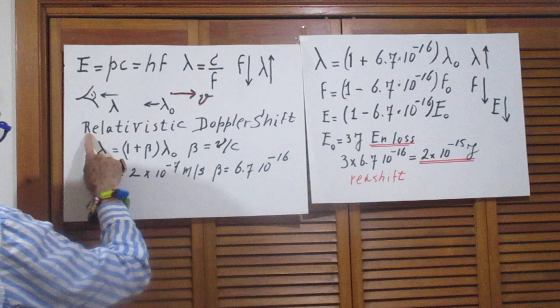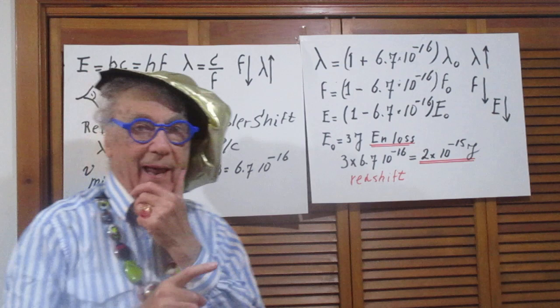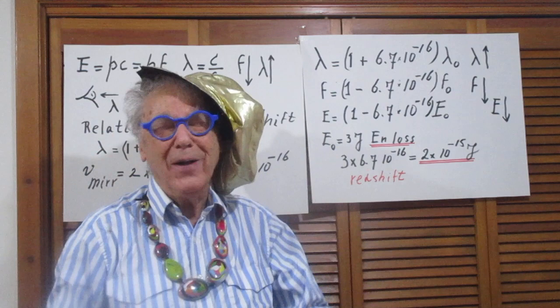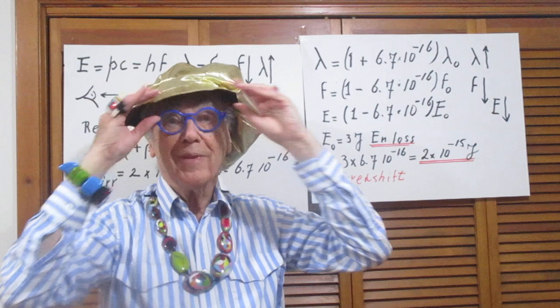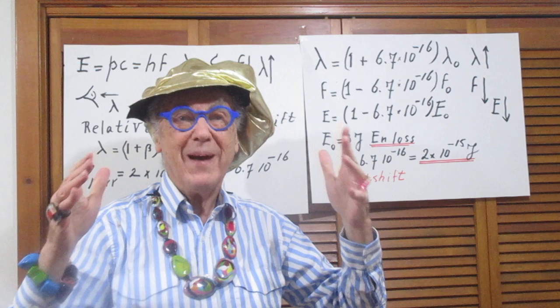I derive that in one of my lectures, and what follows here is only correct if the speed is much, much, much, much, much, much smaller than the speed of light. Only then will my equations hold. Trust me, it is really much, much, much lower than the speed of light. It is only 2 times 10 to the minus 7 meters per second.